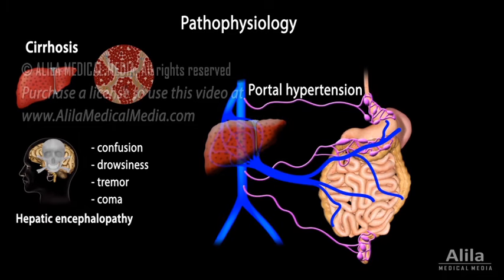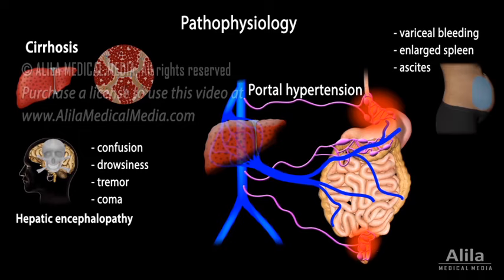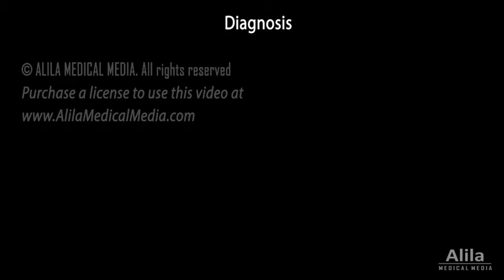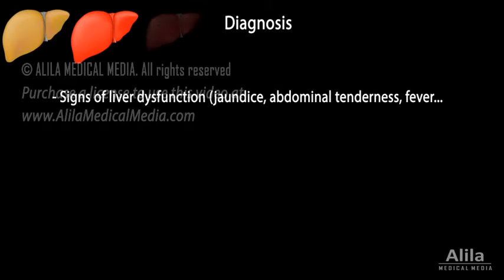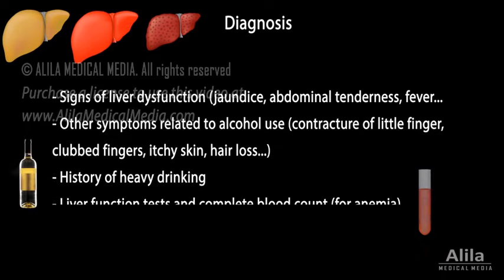Portal hypertension may cause variceal bleeding, enlarged spleen, and abdominal distension. Diagnosis is usually based on signs of liver dysfunction, other symptoms related to alcohol use, history of heavy drinking, liver function tests, and complete blood count.